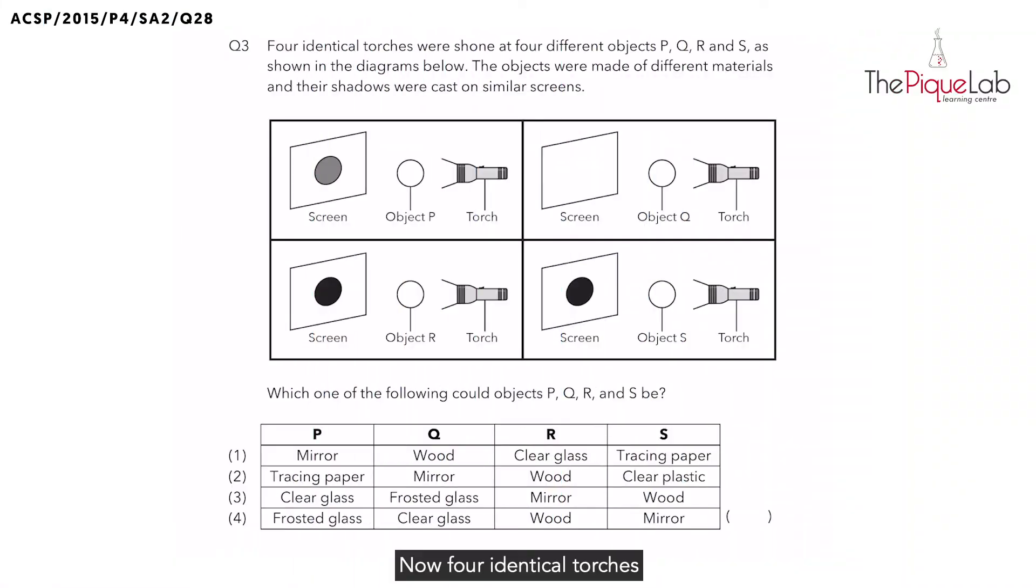Four identical torches were shone at four different objects P, Q, R, and S, and the objects were made of different materials, which causes different shadows to be cast on similar screens. They then ask you which one of the following could objects P, Q, R, S be.